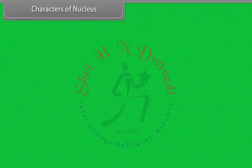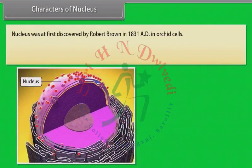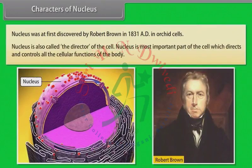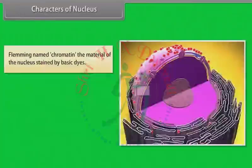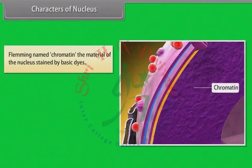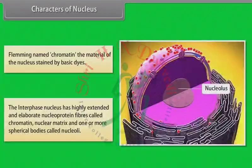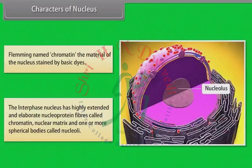Characters of nucleus. Nucleus was first discovered by Robert Brown in 1831 AD in orchid cells. Nucleus is also called the director of the cell, as it directs and controls all the cellular functions of the body. Fleming named chromatin the material of the nucleus stained by basic dyes. The interphase nucleus has highly extended and elaborate nucleoprotein fiber called chromatin, nuclear matrix, and one or more spherical bodies called nucleoli.